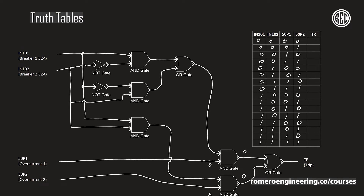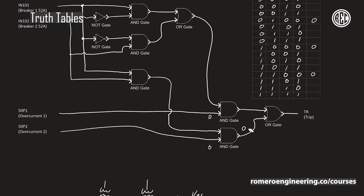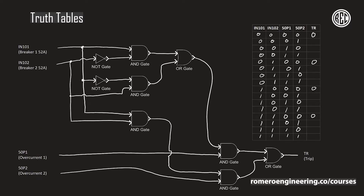Anytime either 50P1 or 50P2 are zero, the second inputs to these two AND gates at the end are going to be zeros, therefore their outputs are going to be zeros, and feeding into the OR gate means the output has to be a zero. So anytime 50P1 and 50P2 are zeros, I know my output is going to be a zero. Looking at my truth table, I can find where that happens and write down those four outputs as zero.